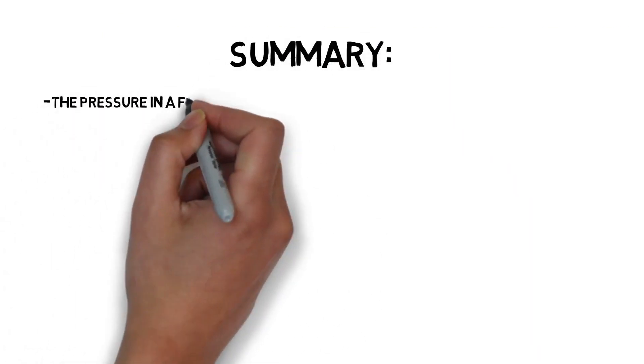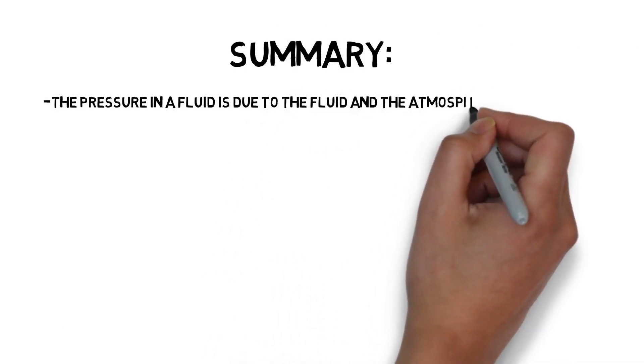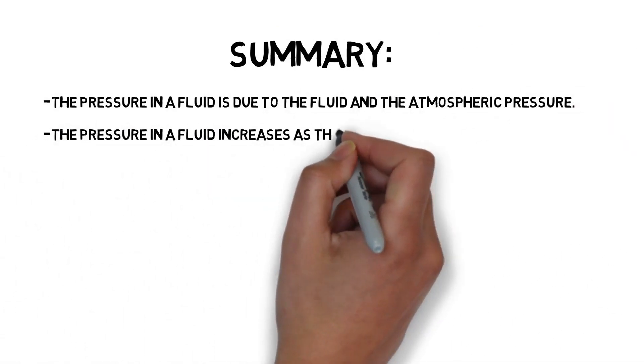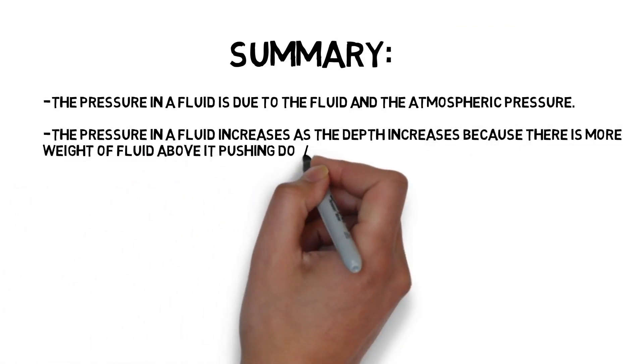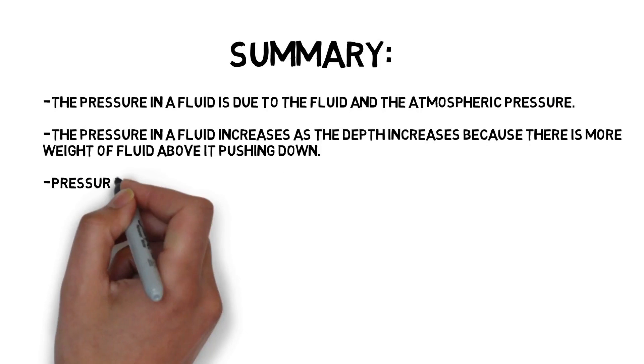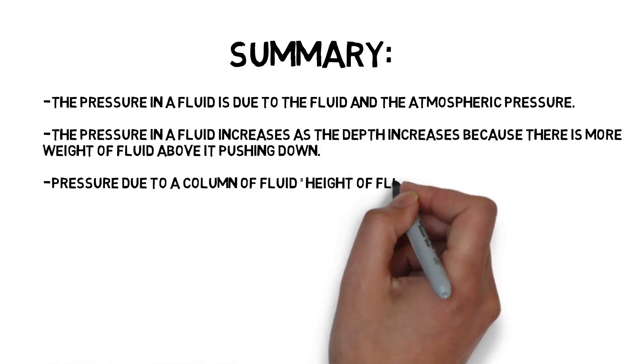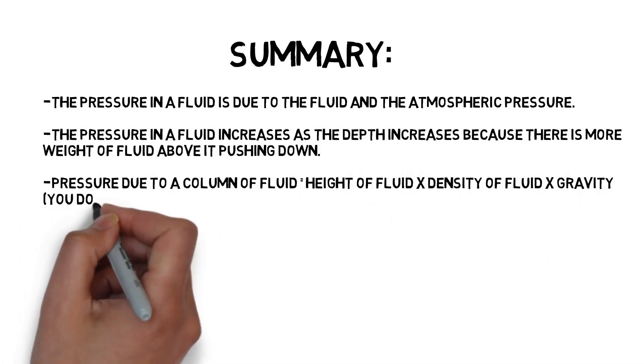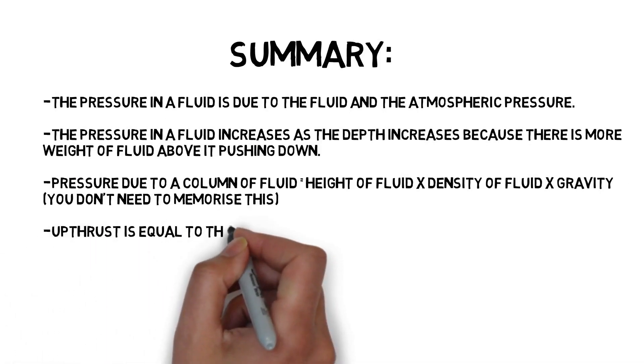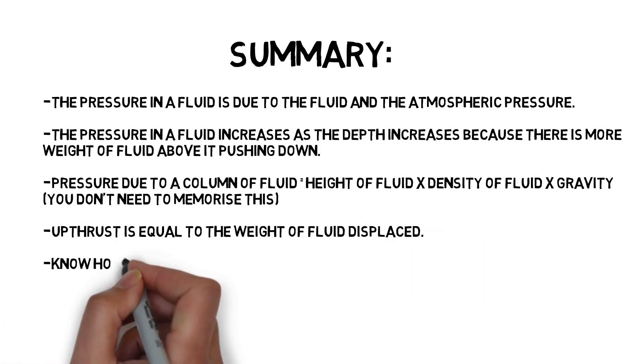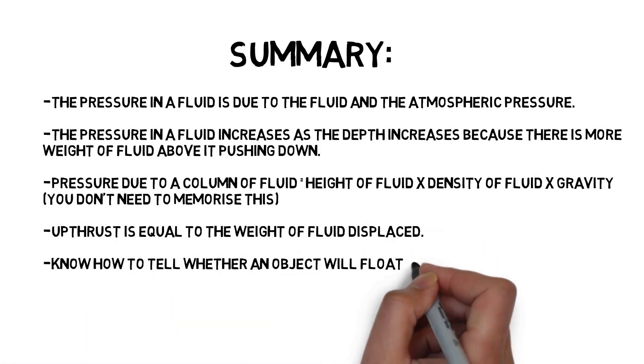Summary: The pressure in a fluid is due to the fluid and the atmospheric pressure. The pressure in a fluid increases as the depth increases because there is more weight of fluid above it pushing down. The pressure due to a column of fluid equals the height of the fluid times by density of fluid times by gravity. You don't need to memorize this. Upthrust is equal to the weight of fluid displaced. Know how to tell whether an object will float or sink.